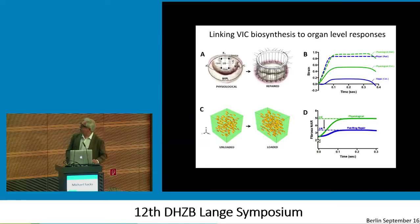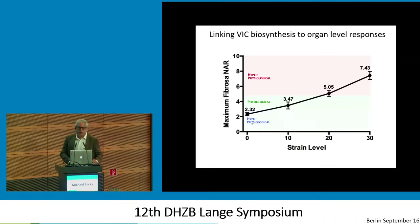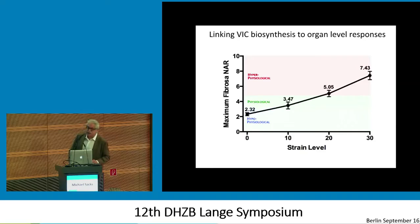This is probably a way to summarize that: what we found from in vitro measurements is that cells need to be deformed within a certain range to maintain the normal synthetic phenotype. If you over-deform them, they actually go into hyperphysiologic mode and really crank out a tremendous amount of proteins. Interestingly, if they're underloaded — which is something you don't want to think about — they actually begin to shut down and produce much less, which may have a deleterious effect in the long run on the extracellular matrix of the valve.